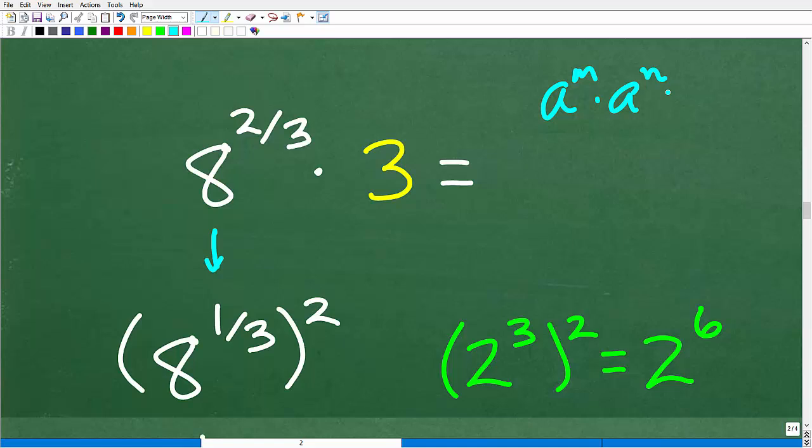A to the M times A to the N - when we're multiplying powers with the same base, we are going to add the exponents. When we are dividing powers with the same base, we're going to subtract the exponents, the numerator exponent from the denominator exponent. And then when we're taking a power to another power, we have A to the M to the N. That's equal to A to the M times N.